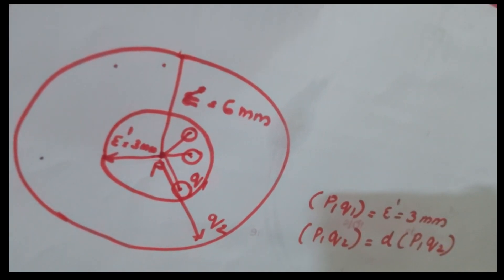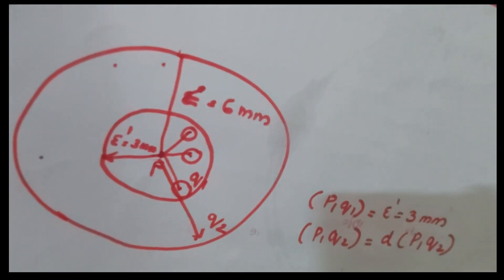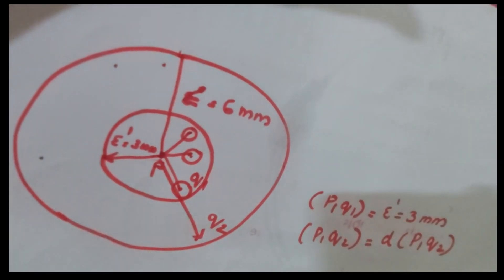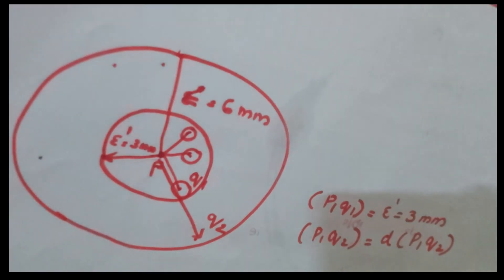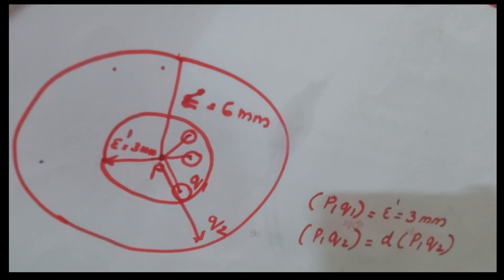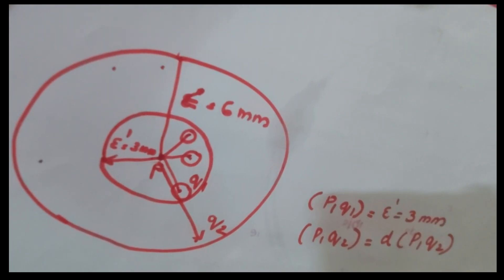The reachability distance and core distance are stored in OPTICS to find the clustering order. The time complexity of OPTICS is O(n log n), which is the same as DB SCAN. Thank you for watching.